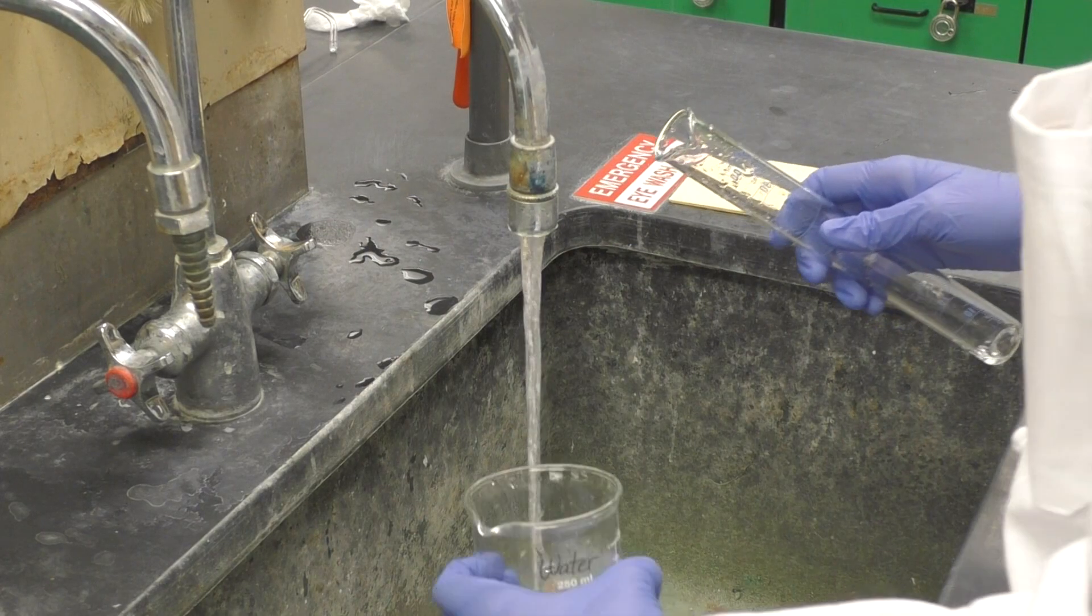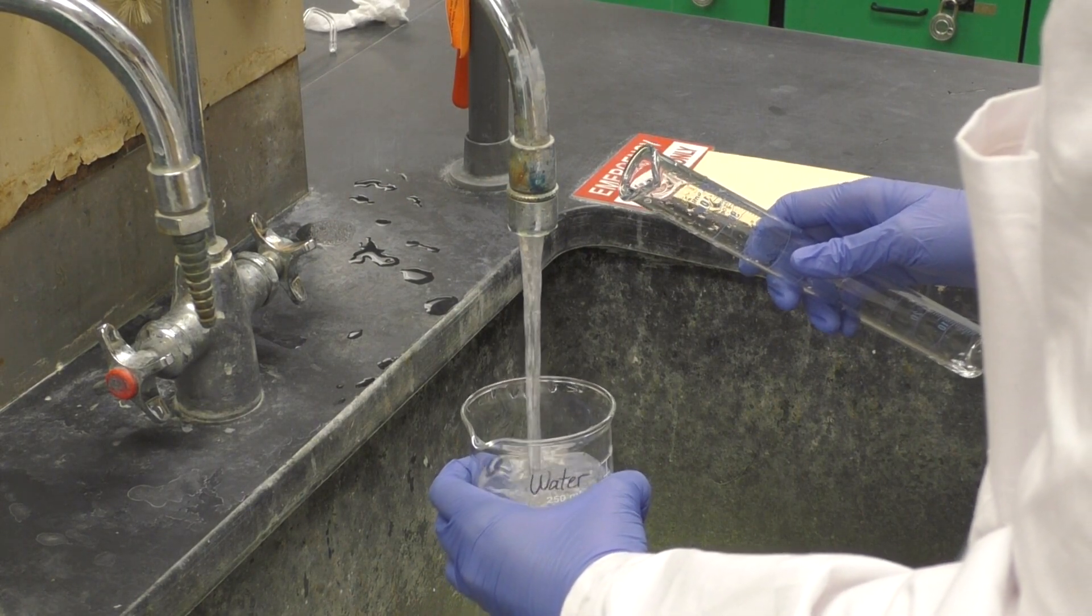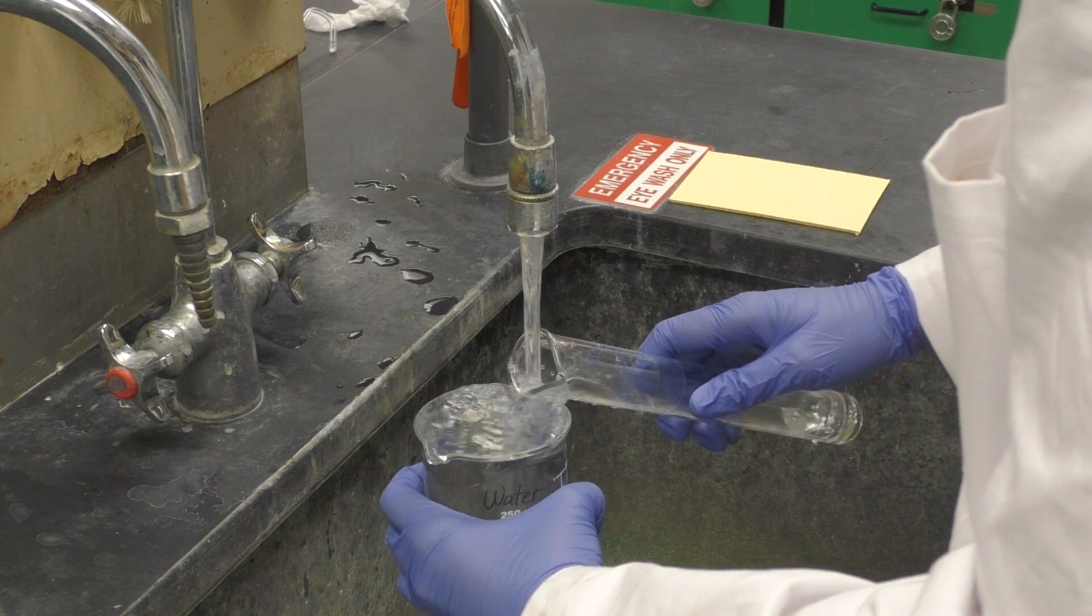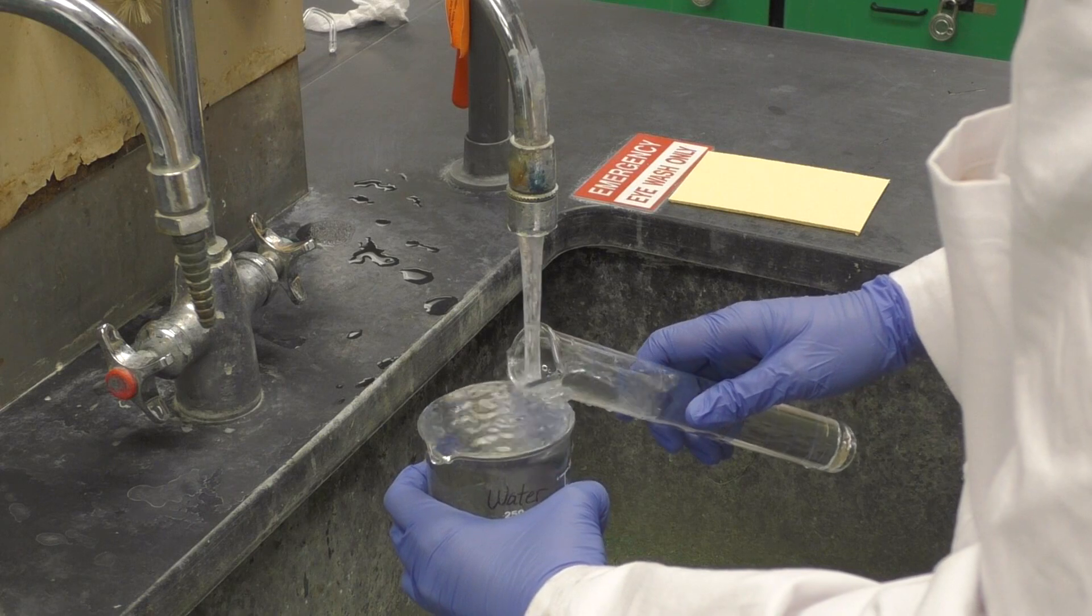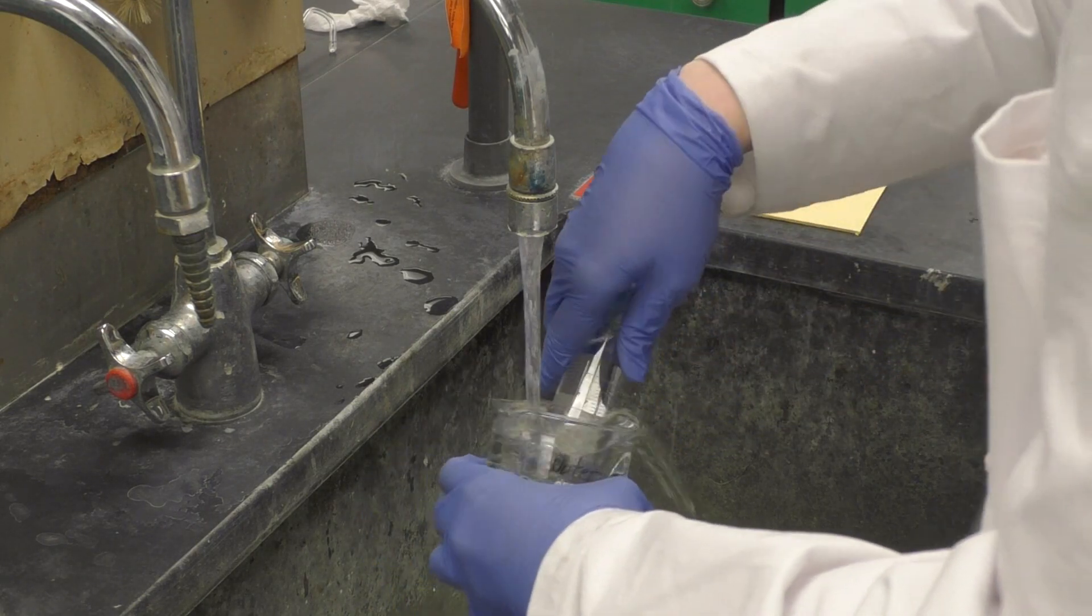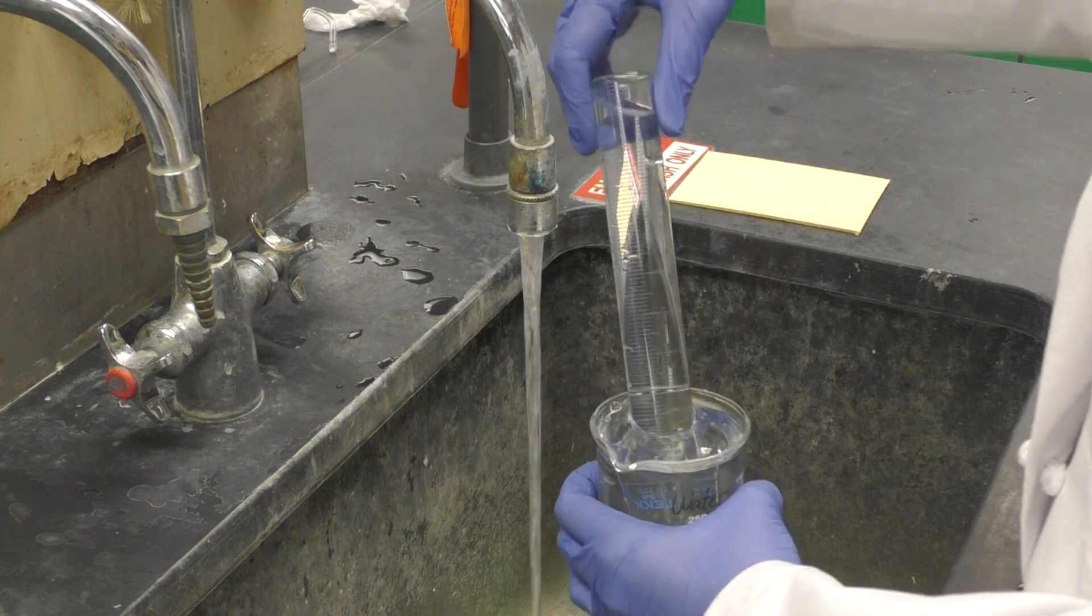First you need to fill your 250ml beaker and 100ml graduated cylinder with water, and invert the graduated cylinder into the beaker so only a small pocket of air remains at the top. This part takes practice to get right, so keep trying until you only have a small amount of air remaining in the cylinder.